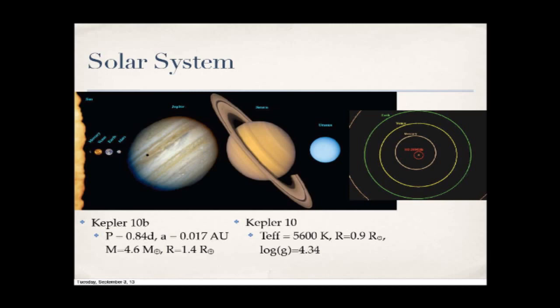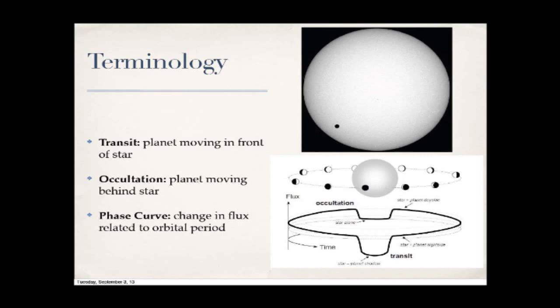Let's look at some terminology: transit versus occultation. The top animation shows the transit of Venus going in front of our Sun. This is what Kepler is seeing — not as a resolved image, but essentially as a single couple of pixels of light merged together. As the planet moves in front of the star, a little bit of light is blocked off, relative to the size of the star compared to the planet.